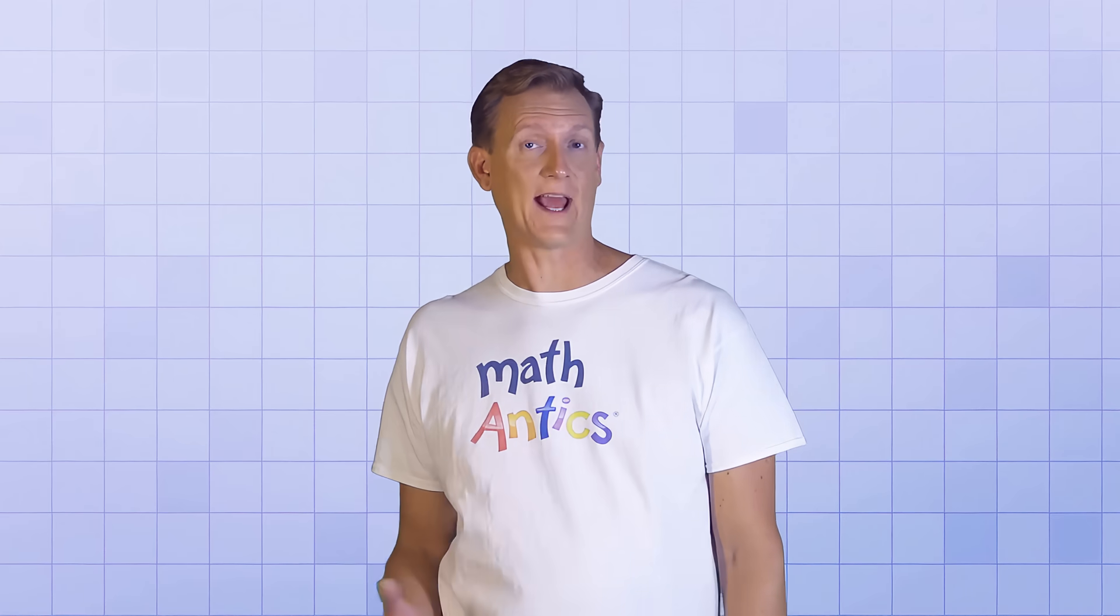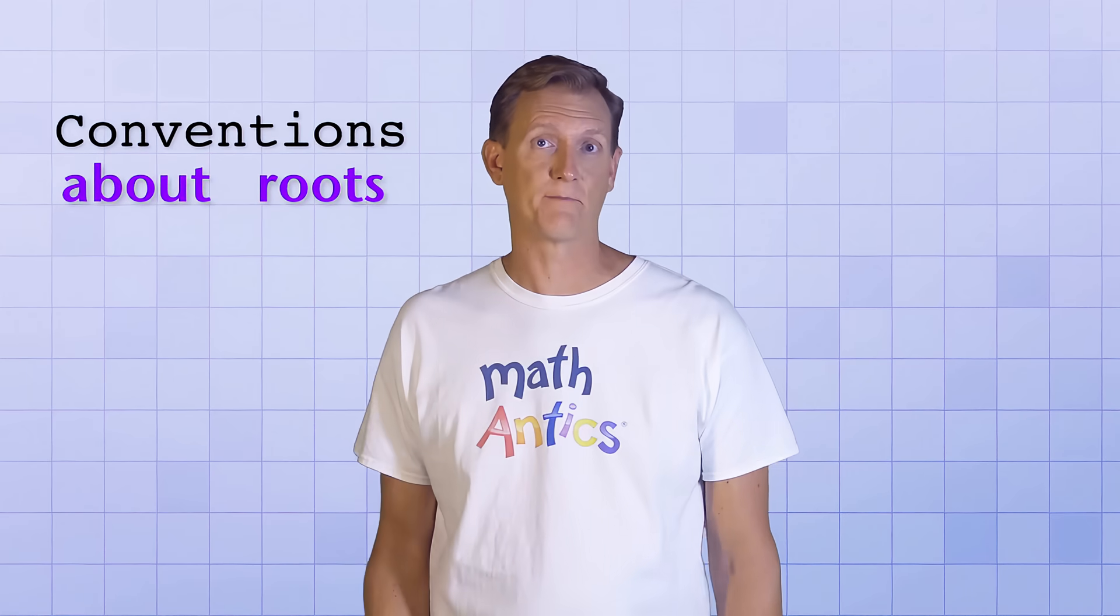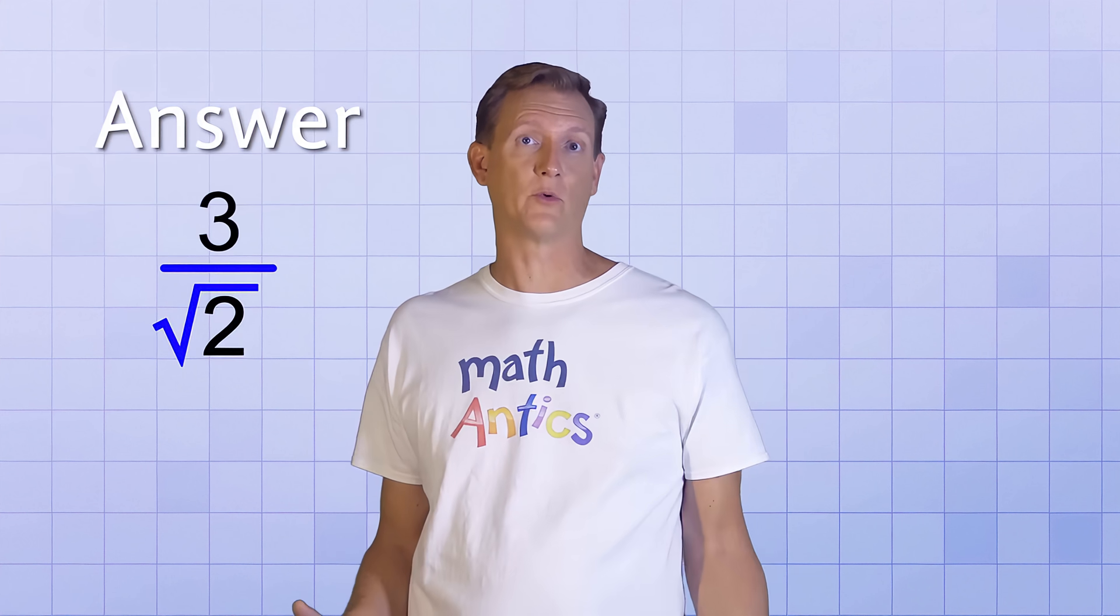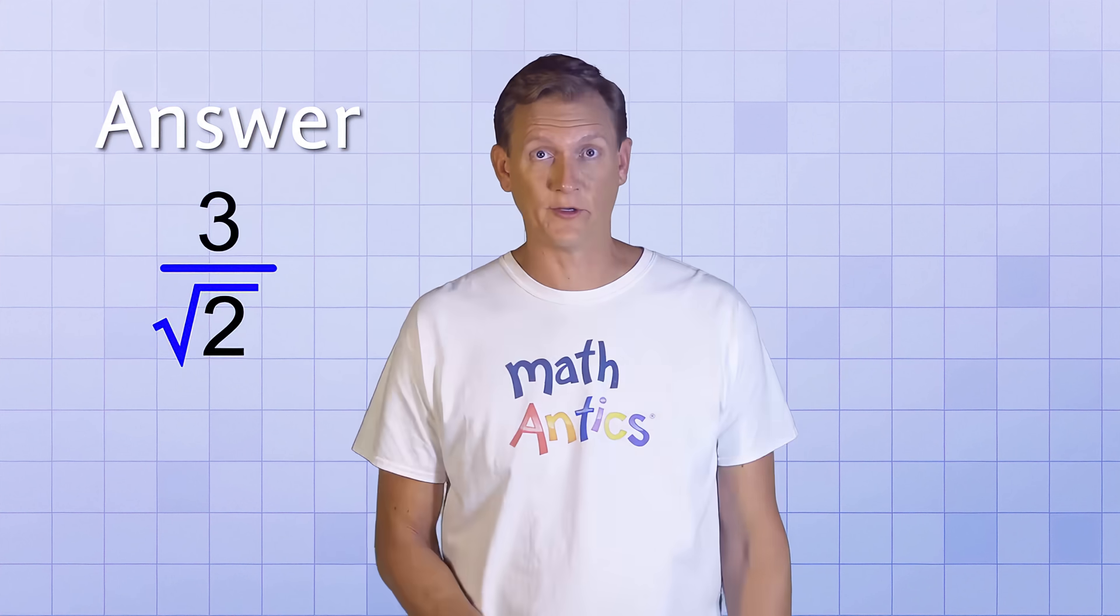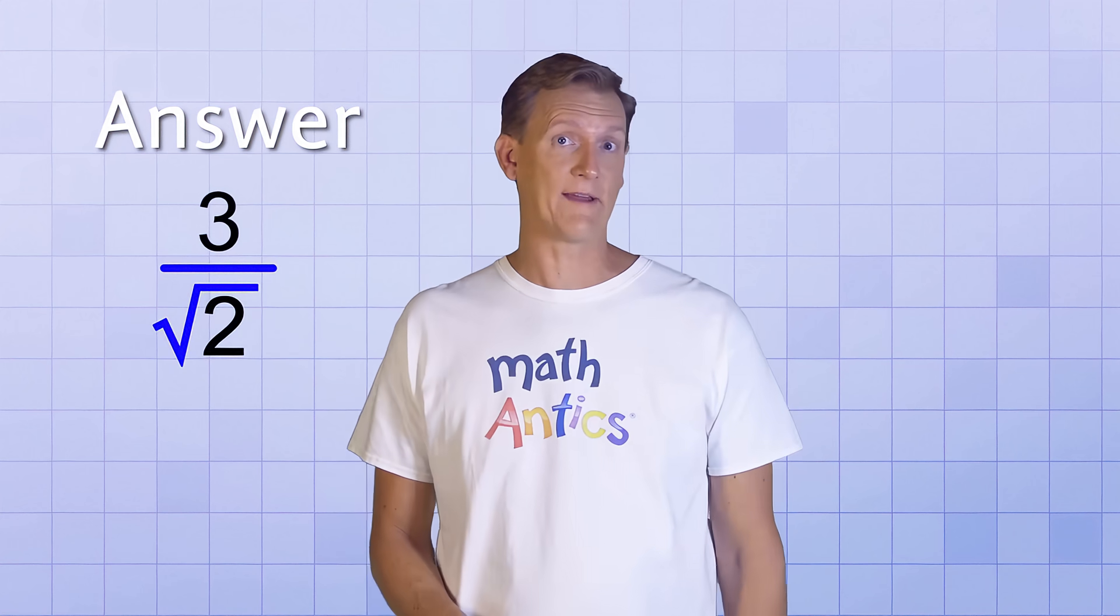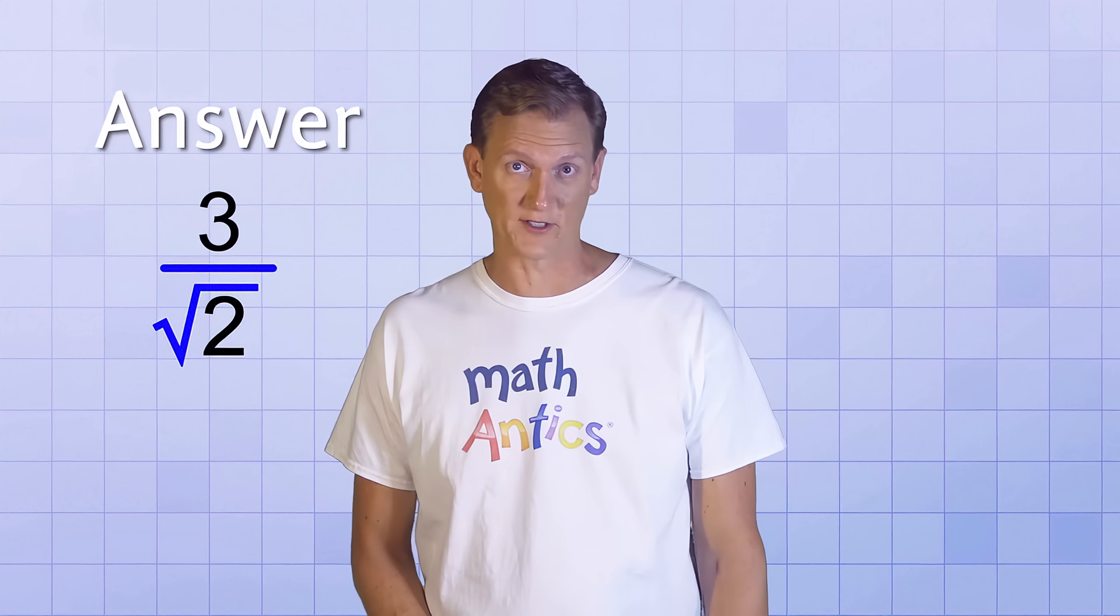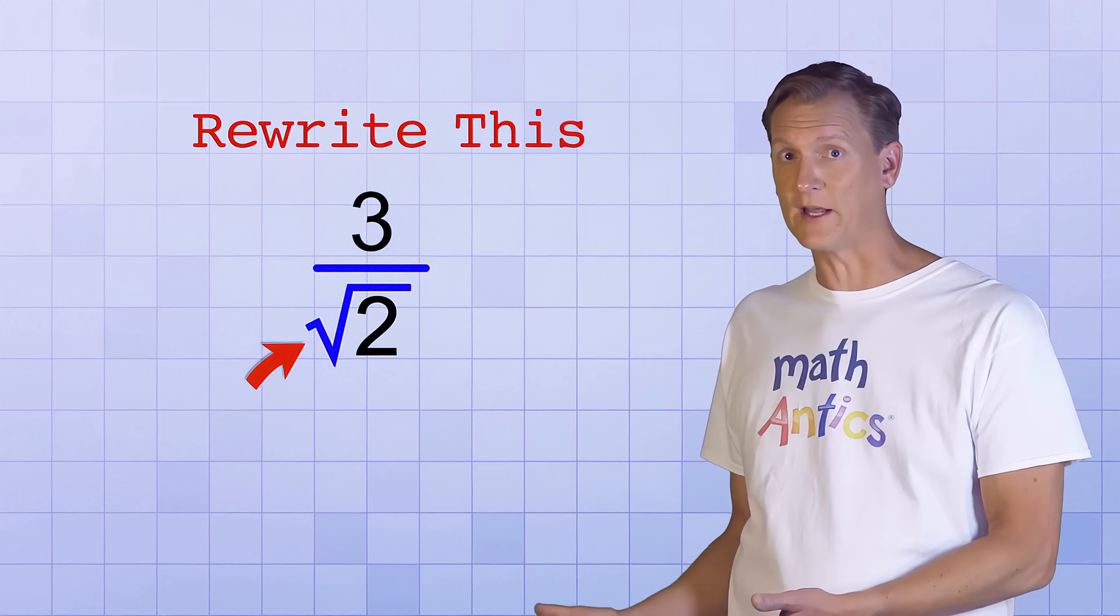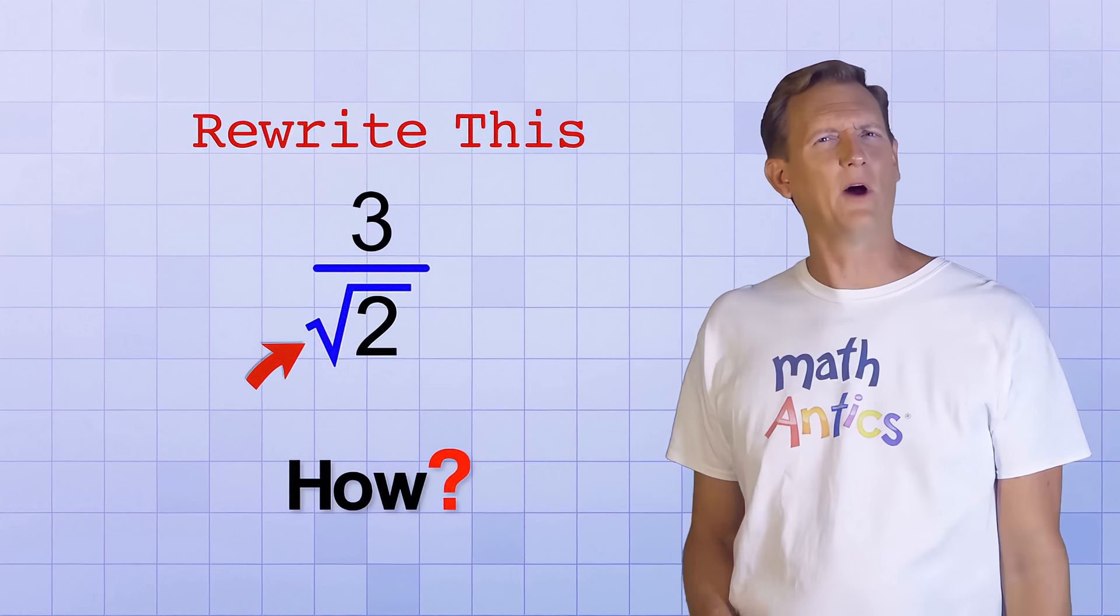Oh, and there's one more quick thing that I want to mention in this video that has to do with conventions about roots. Sometimes, an answer to a math problem might be a fraction with a root in the denominator like this one, 3 over the square root of 2. The square root of 2 can't be simplified, but many mathematicians like to avoid having roots in the denominator, especially when those roots are irrational numbers. So, if your teacher asked you to rewrite this fraction without a root in the denominator, how would you do it?